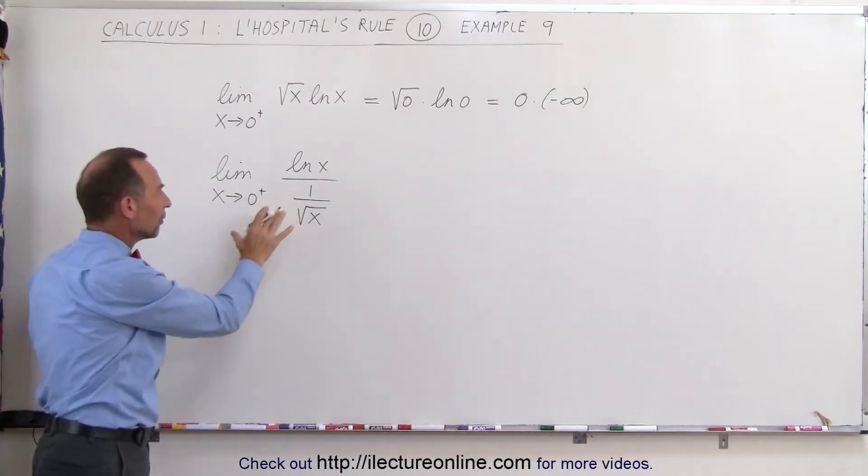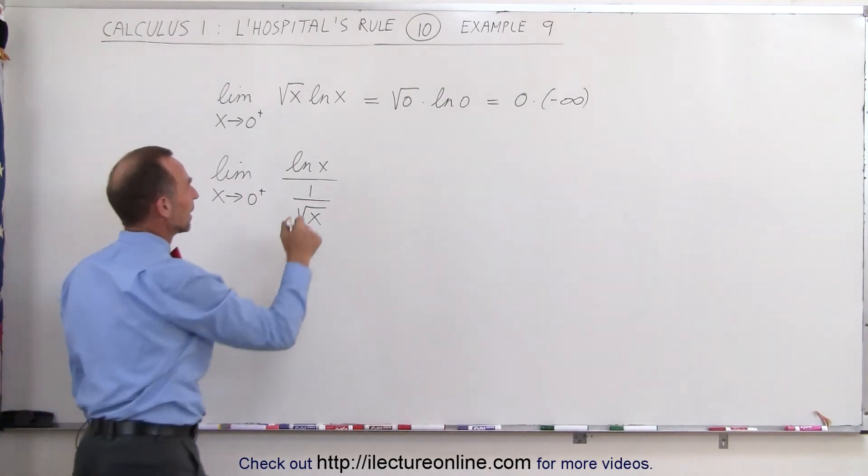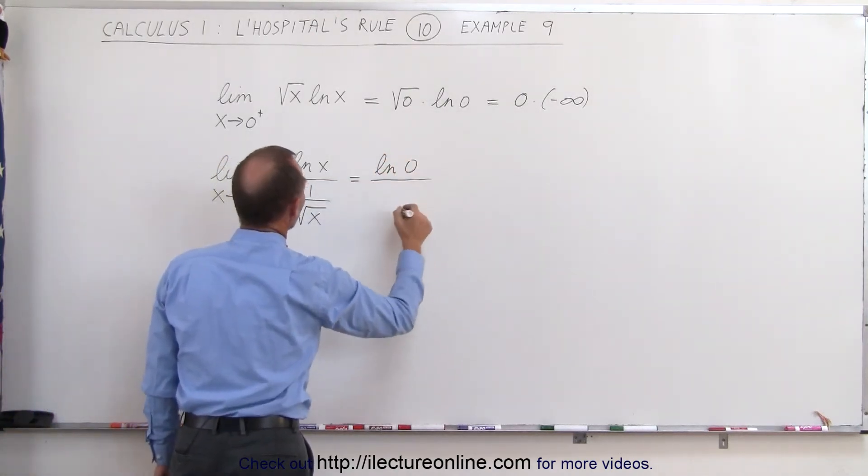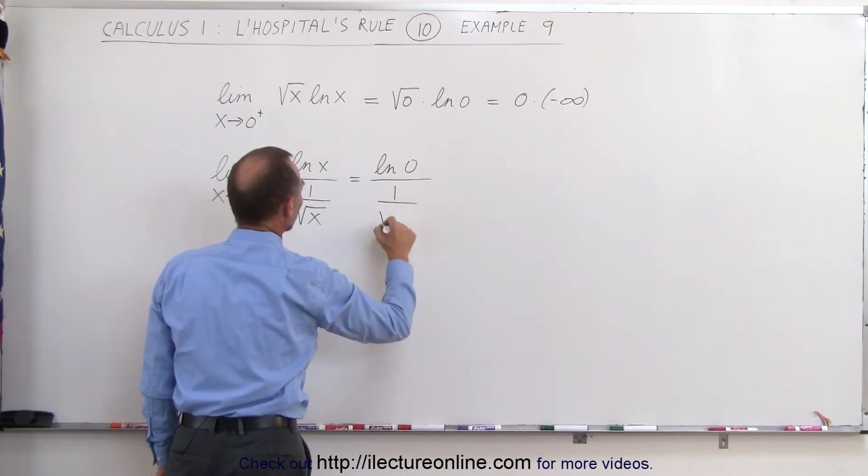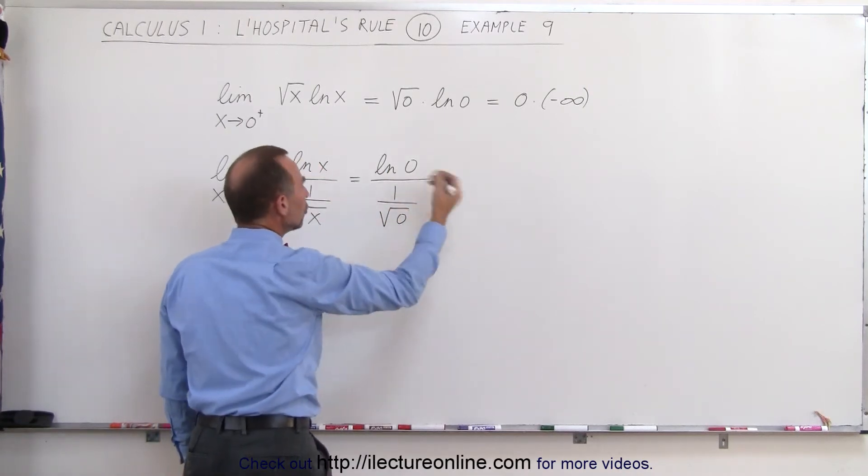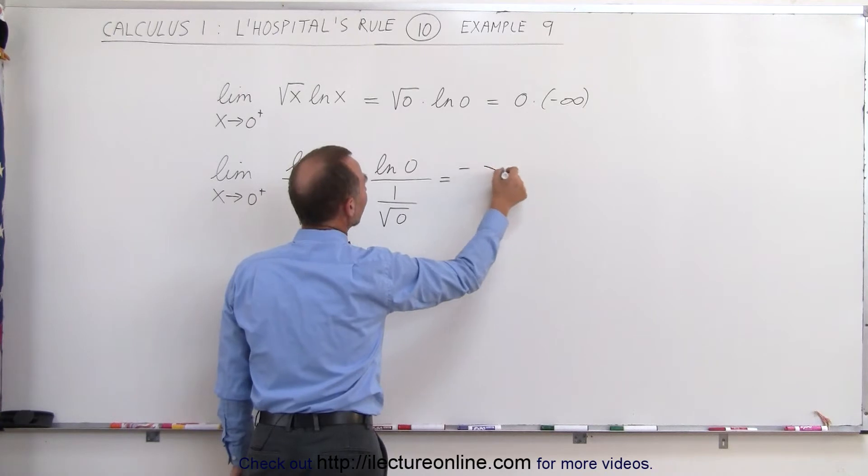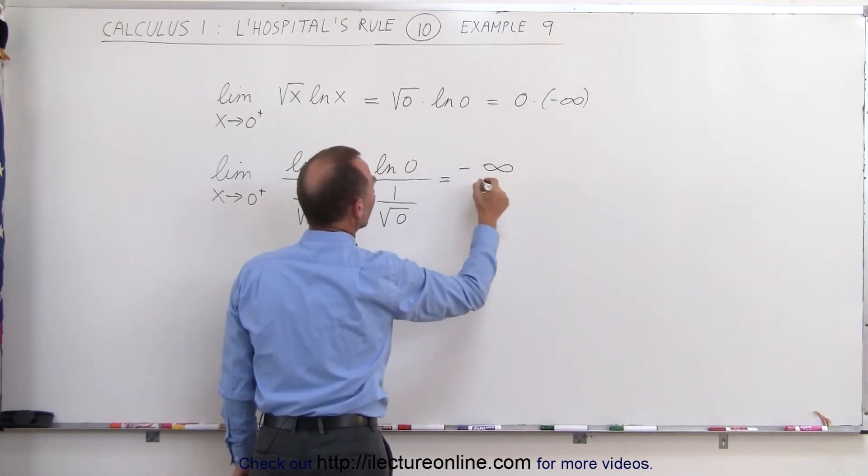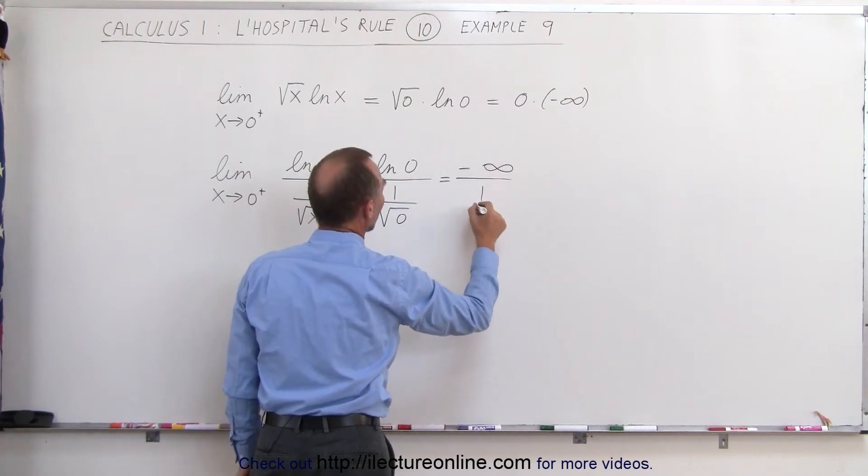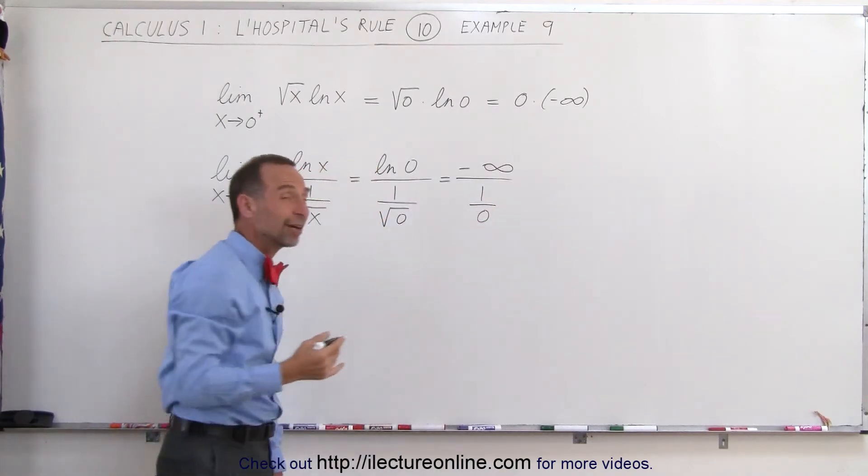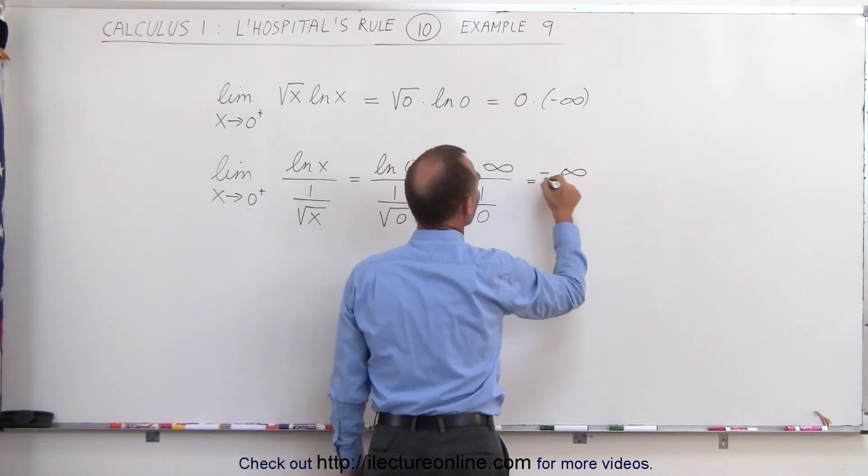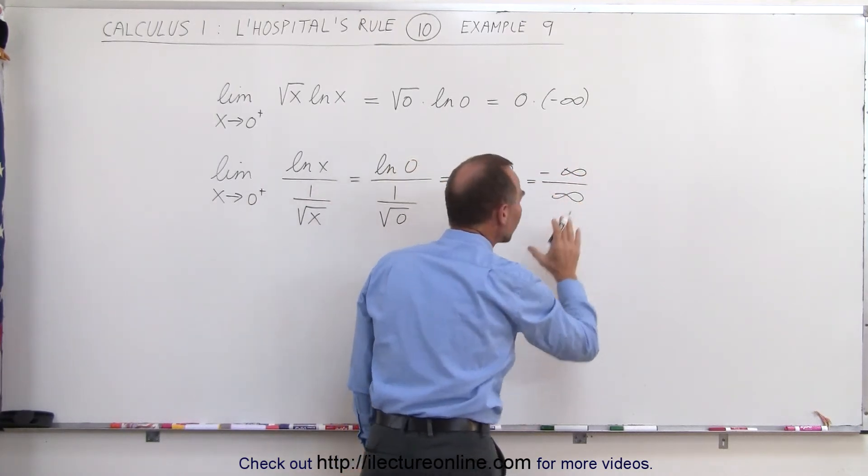Let's plug in the 0 and see what we get. This gives us the natural log of 0 divided by 1 divided by the square root of 0. The numerator is equal to negative infinity divided by 1 over 0, and 1 divided by 0 is infinity. This becomes negative infinity divided by infinity, and that is the proper form.